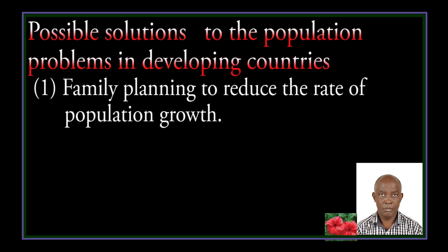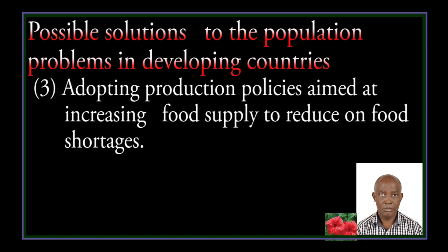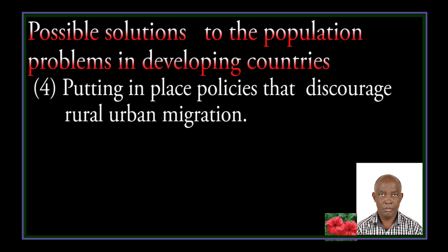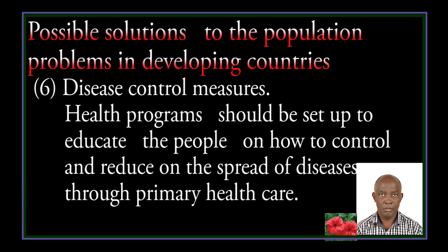Possible solutions to population problems in developing countries: family planning to reduce the rate of population growth. Encouraging higher education, putting emphasis on female education. Adopting production policies aimed at increasing food supply to reduce food shortages. Putting in place policies that discourage rural-urban migration. Rural development policies aimed at making rural areas attractive. Disease control measures — programs should be set up to educate people on how to control and reduce the spread of disease.